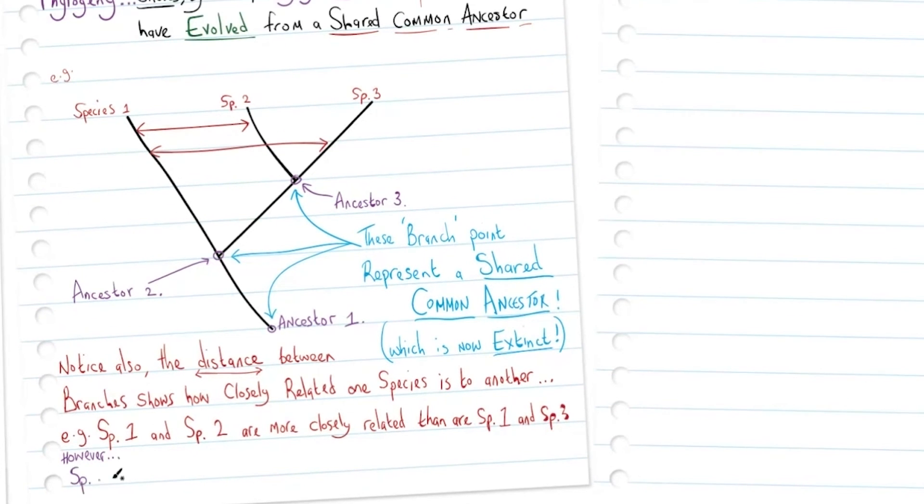However, species 2 and species 3 are more closely related than species 1 is to species 2, or species 1 is to species 3.